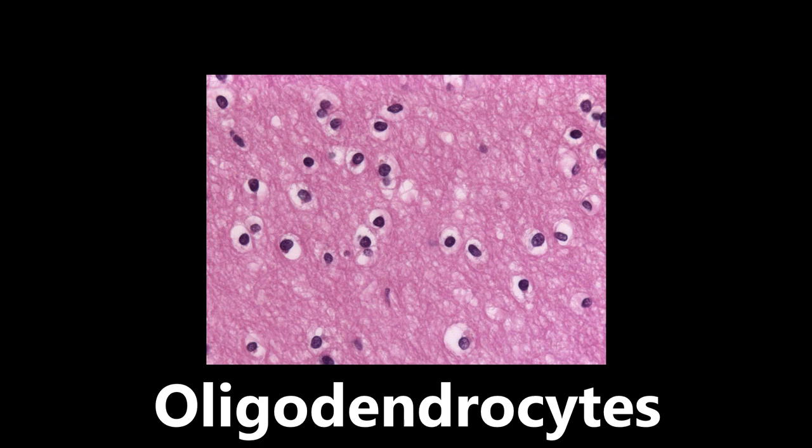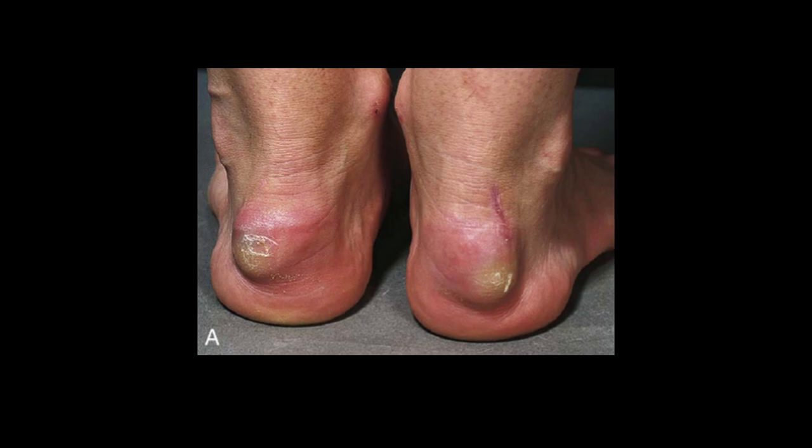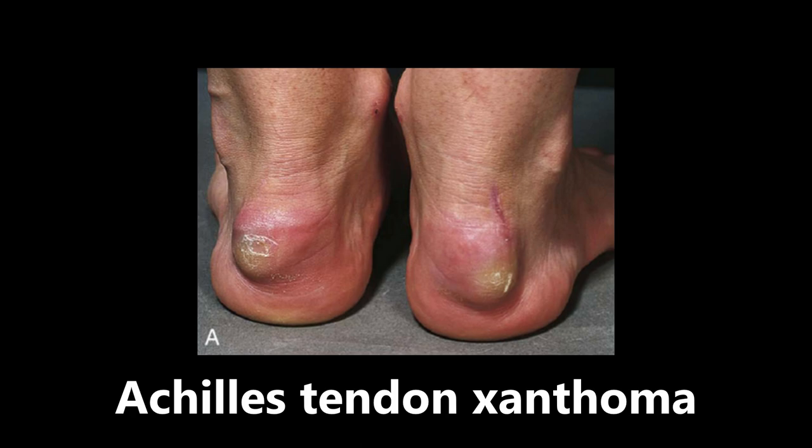This next image is going to be an example of an Achilles tendon xanthoma. This is basically a painless accumulation of cholesterol, as well as macrophages and inflammatory cells, occurring in the Achilles tendon, typically bilateral. This is seen with a couple different conditions, but the important one to know is familial hypercholesterolemia. If you see this image, you want to be thinking Achilles tendon xanthoma and familial hypercholesterolemia.